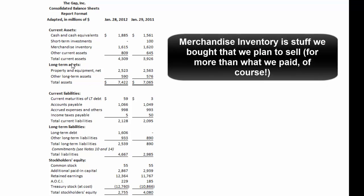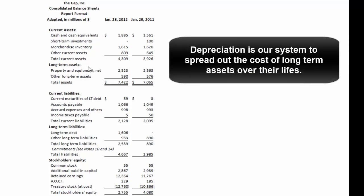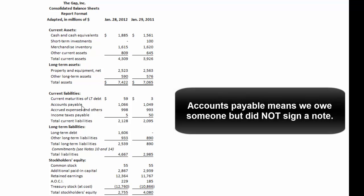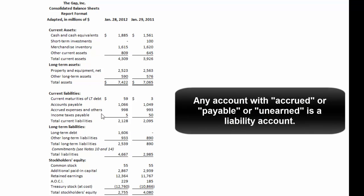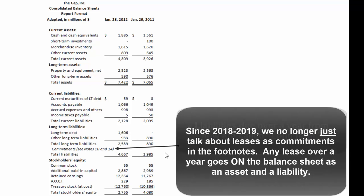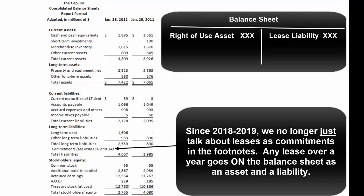Merchandise inventory is stuff they bought that they plan to sell. Property, plant, and equipment is listed at net value — meaning minus accumulated depreciation, which is total depreciation written off so far. Current maturities of long-term debt is due within the next year. Accounts payable means pay for it later without signing a note. Accrued expenses are things like rent due but not yet paid. Long-term debt is borrowed money due more than a year from now. One way this balance sheet is out of date: since 2018–2019, leases count as liabilities, so you'd have a right-of-use asset and a lease liability.